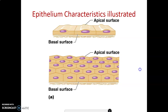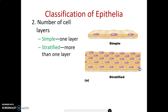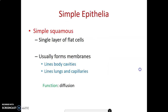Classification of epithelium. You can classify epithelium based on location — is it lining epithelium or glandular epithelium? Based on the number of layers: one layer is simple, many layers is stratified. Based on shape: flattened cells are squamous epithelium, cube-shaped cells where length and height are equal are cuboidal epithelium, and cells taller than wide are columnar epithelium.